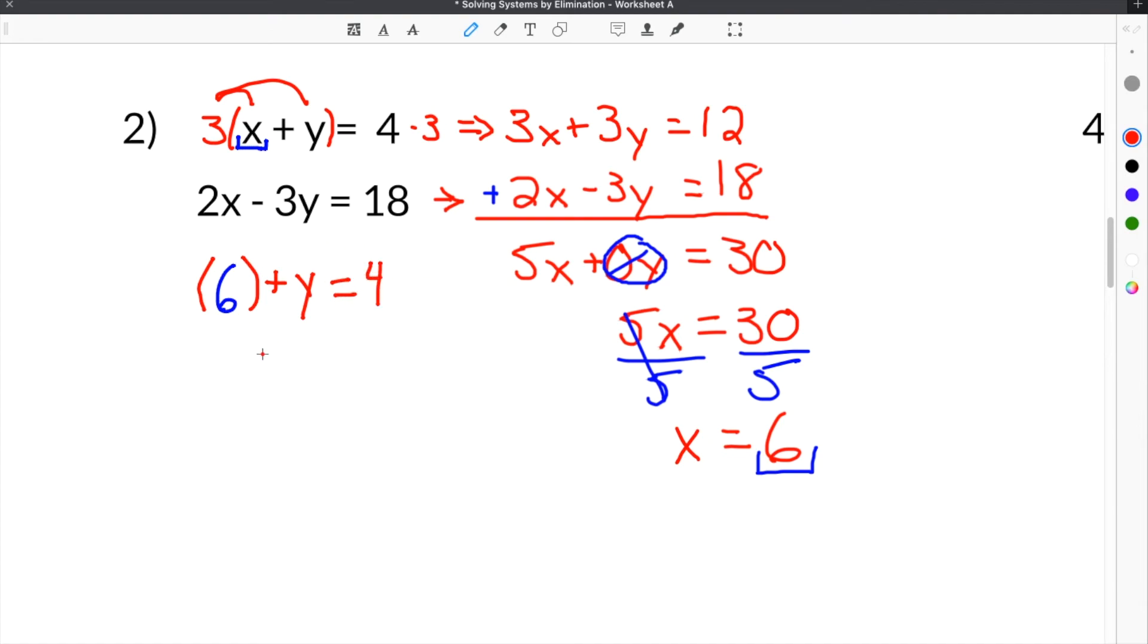Then we have to solve for y, so we'll subtract 6 from both sides. These cancel, and we get y equals negative 2. So our solution is x equals 6, y equals negative 2, and that's the answer.